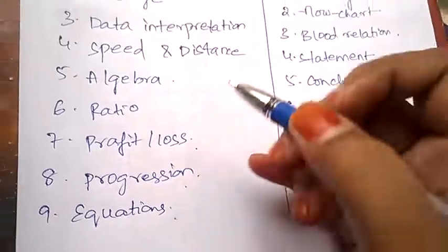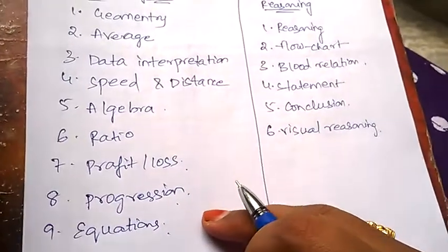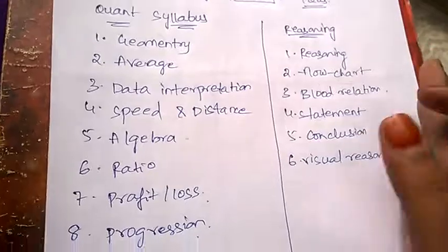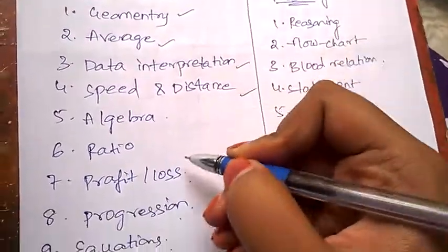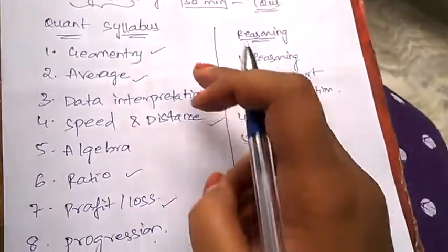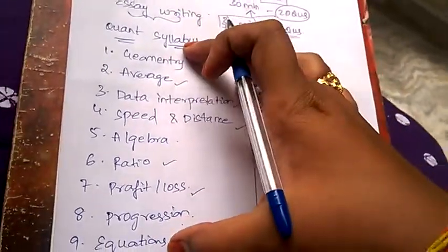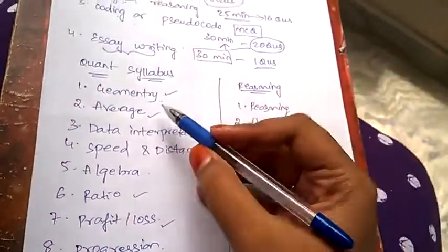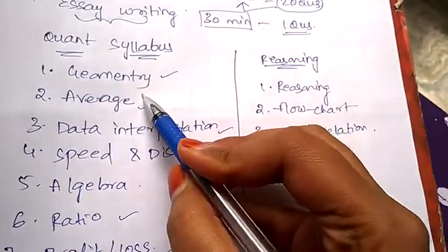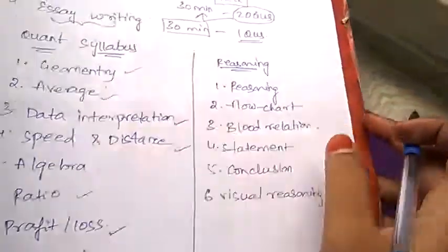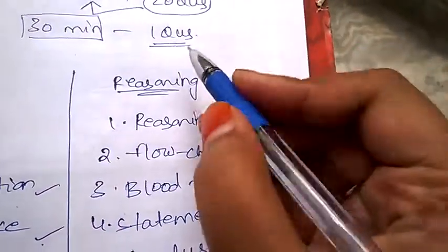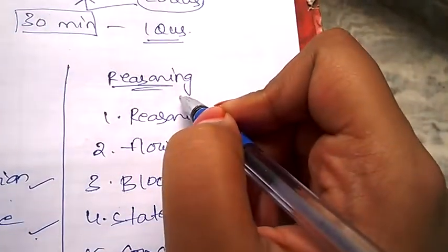All the topics are equally important, but the most important topics are geometry, average, data interpretation, speed and distance, ratio, and profit and loss. Give more weight to these topics.